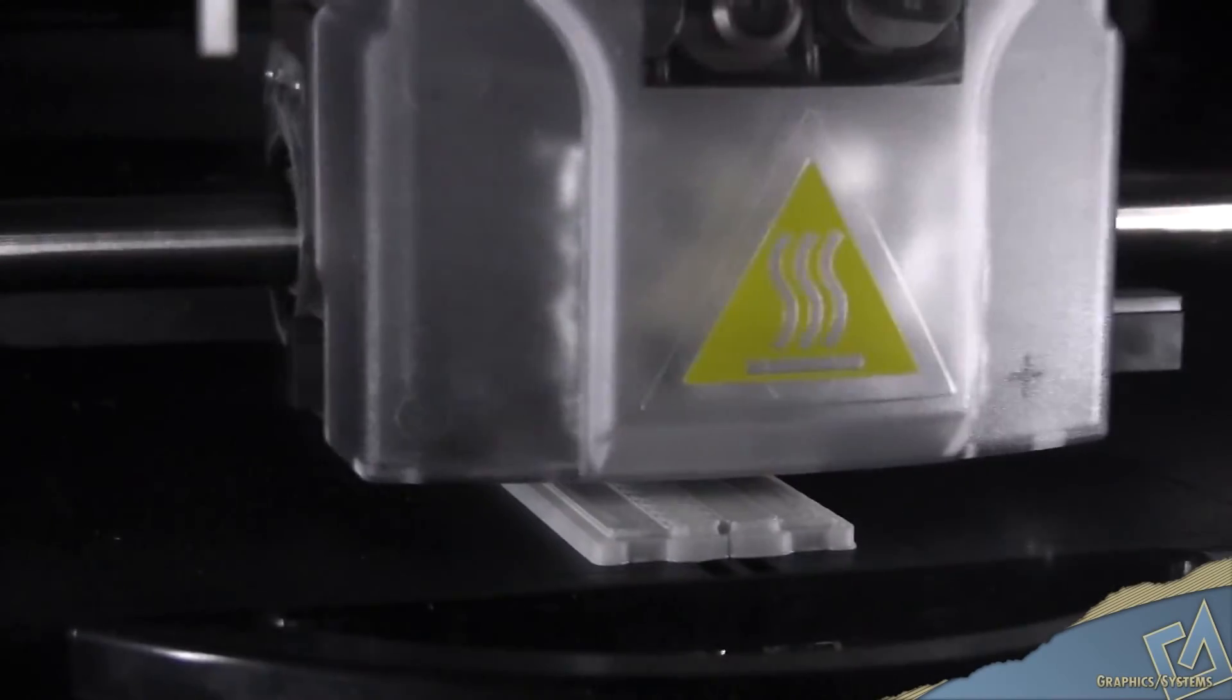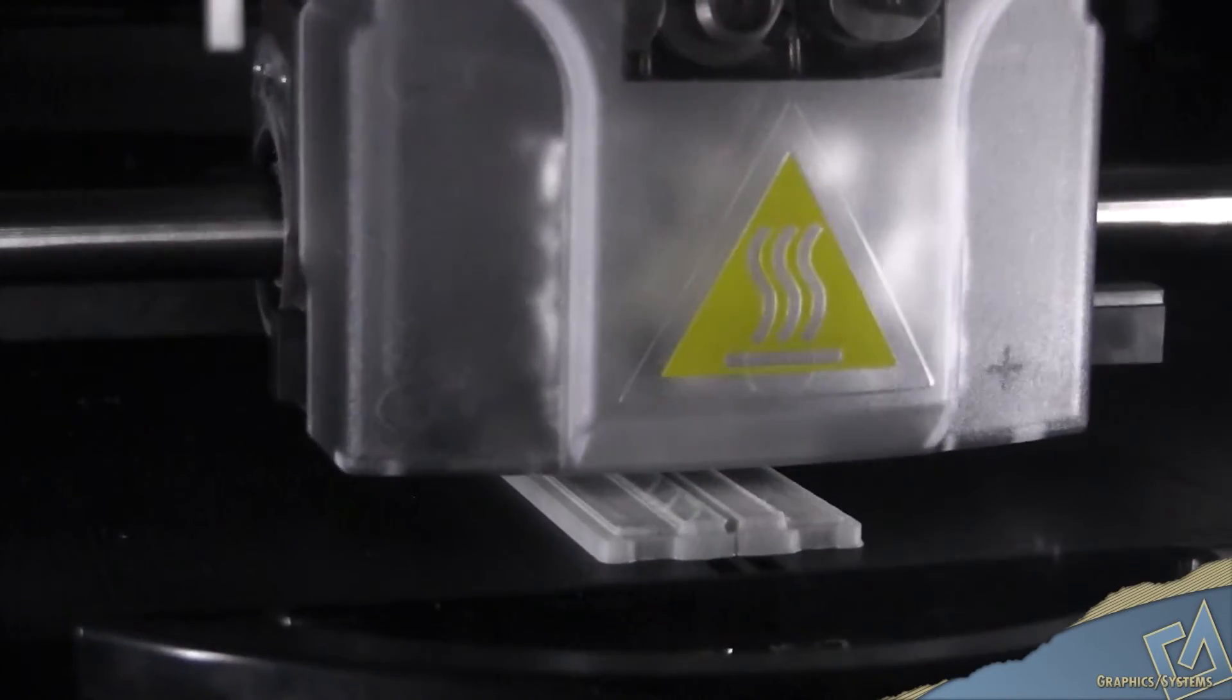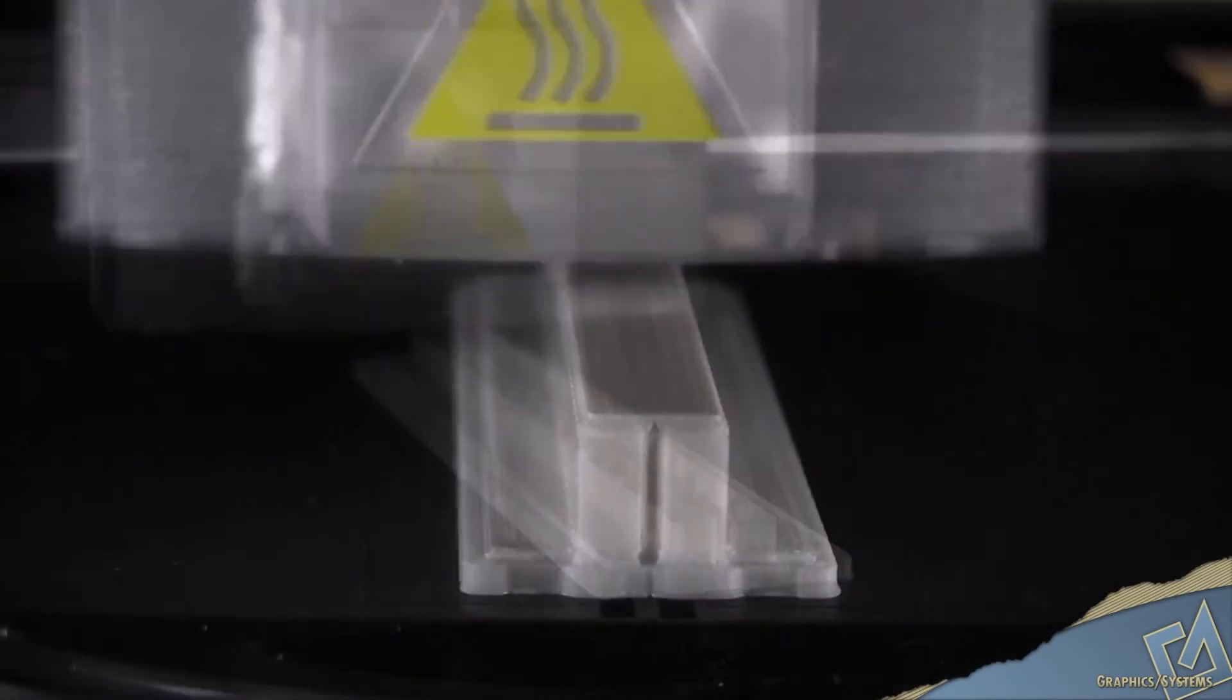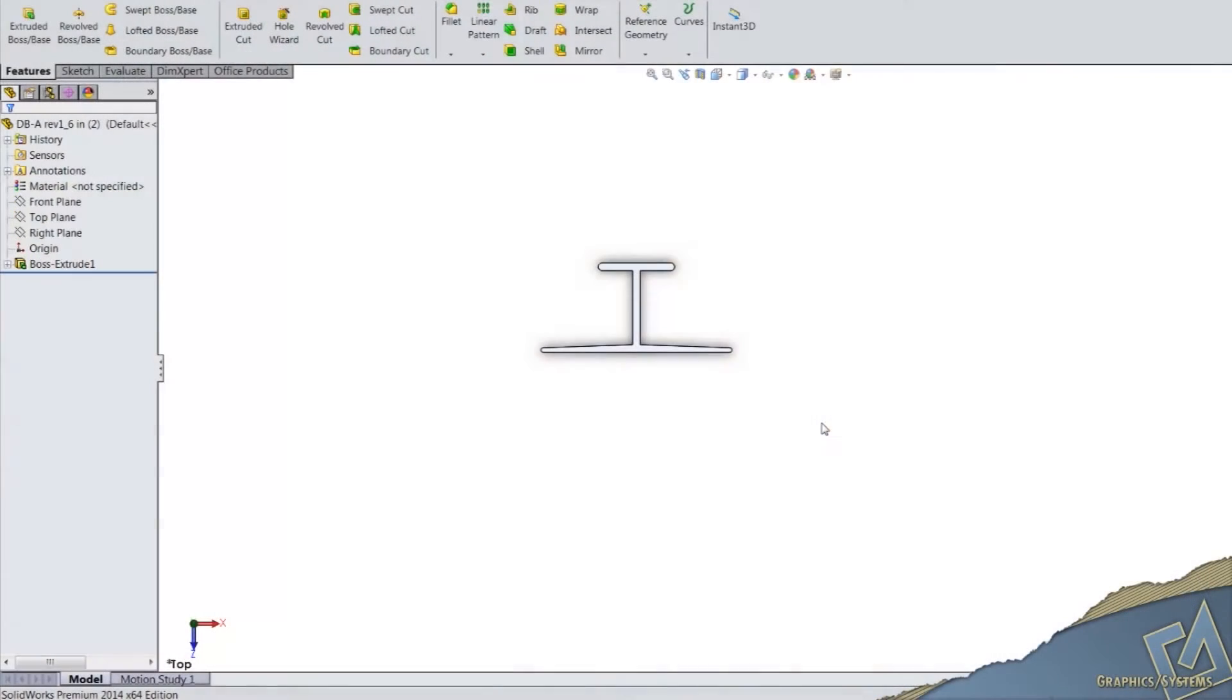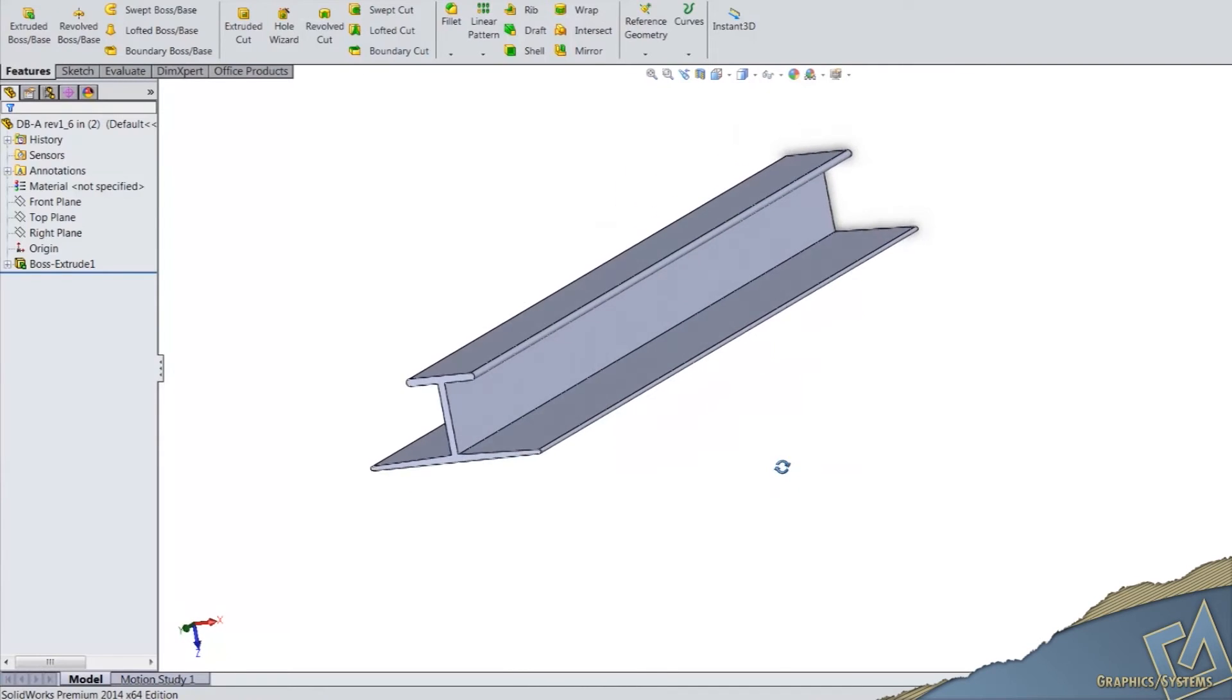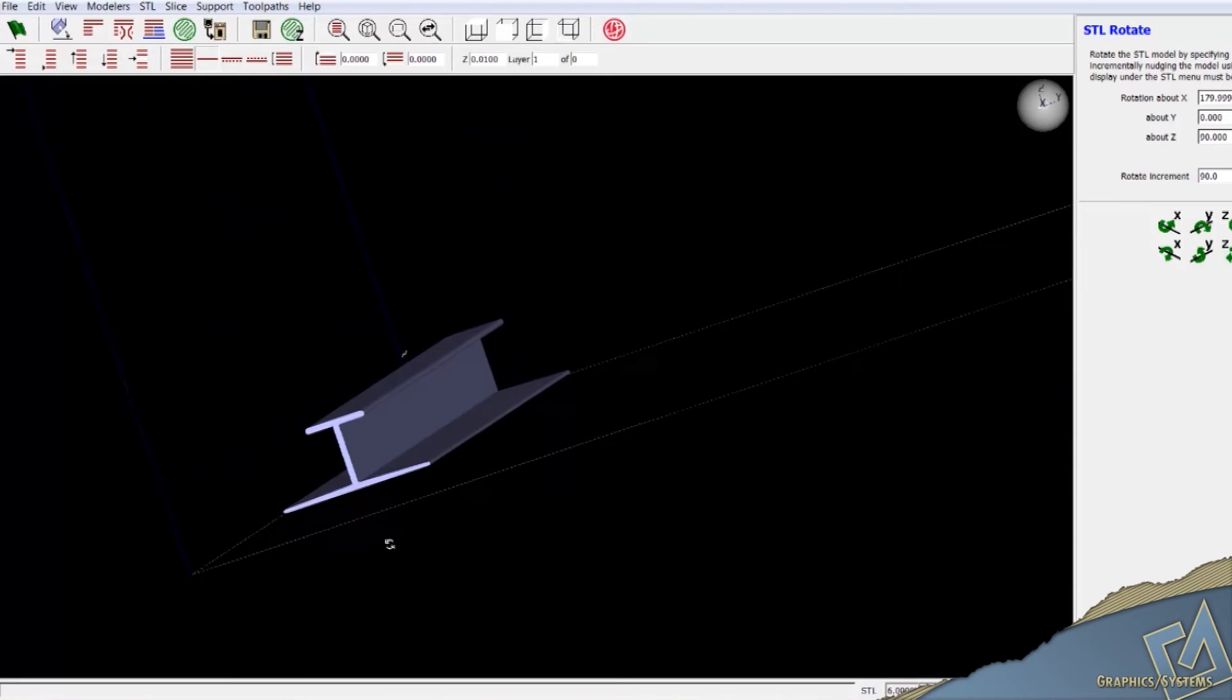When outsourcing prototypes, you really do sacrifice optimum design. When lead times are long and very few changes can be made because of costs, you tend to settle for a design that may not be optimal at the end of the day. By having a prototype machine in-house building within hours, you can make changes, multiple changes, until you're satisfied with the best design possible.